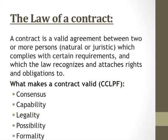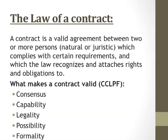The law of contract. A contract is a valid agreement between two or more persons, natural or juristic, which complies with certain requirements and which the law recognizes and attaches rights and obligations to. What this is telling us is that when a contract is signed, it is signed between two or more people. You can never have a contract signed by just one person. A contract is between two people, two individuals, two companies, or two organizations. Whenever these two come together, they comply with certain requirements that the law recognizes and attaches rights and obligations to.